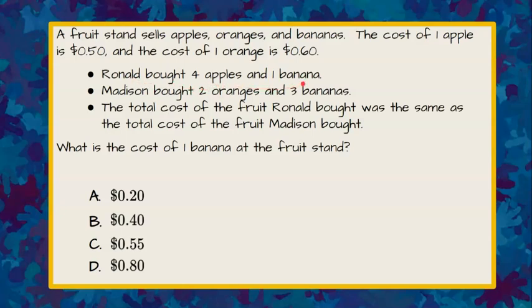Ronald bought four apples and one banana. Madison bought two oranges and three bananas. The total cost of the fruit Ronald bought was the same as the total cost of the fruit Madison bought. What is the cost of one banana at the fruit stand?